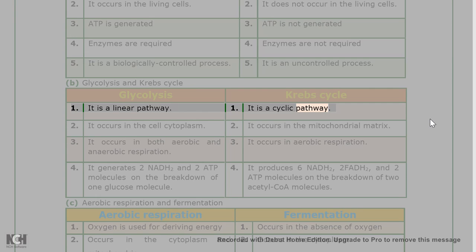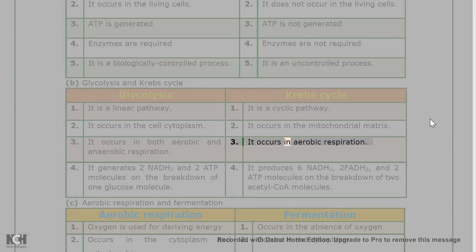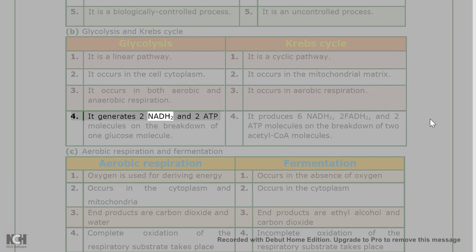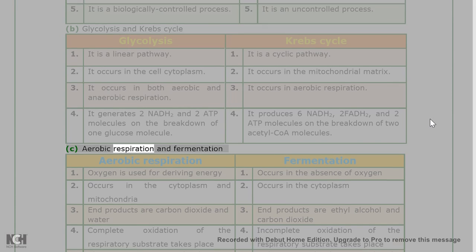Answer 1(b): Glycolysis vs Krebs cycle. Glycolysis is a linear pathway; the Krebs cycle is a cyclic pathway. Glycolysis occurs in the cell cytoplasm; the Krebs cycle occurs in the mitochondrial matrix. Glycolysis occurs in both aerobic and anaerobic respiration; the Krebs cycle occurs only in aerobic respiration. Glycolysis generates 2 NADH₂ and 2 ATP molecules per glucose; the Krebs cycle produces 6 NADH₂, 2 FADH₂, and 2 ATP molecules from two acetyl-CoA molecules.